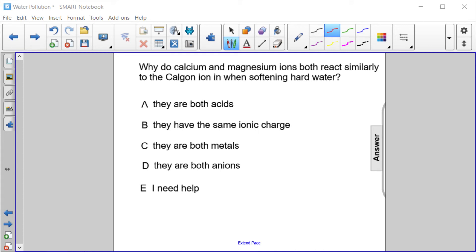Why do calcium and magnesium ions both react similarly to the Calgon ion when softening hard water? A, they're both acids. B, they have the same ionic charge. C, they're both metals. Or D, they're both anions.